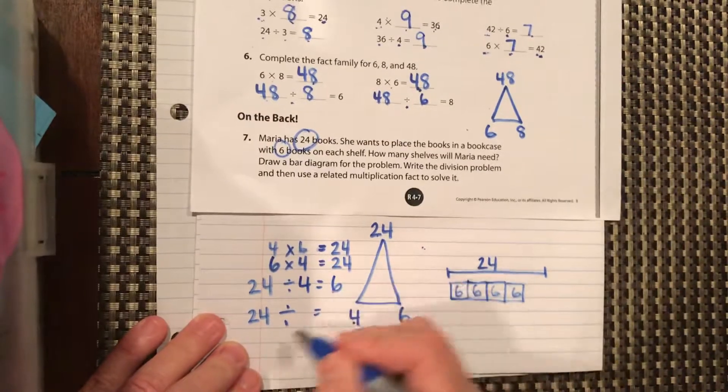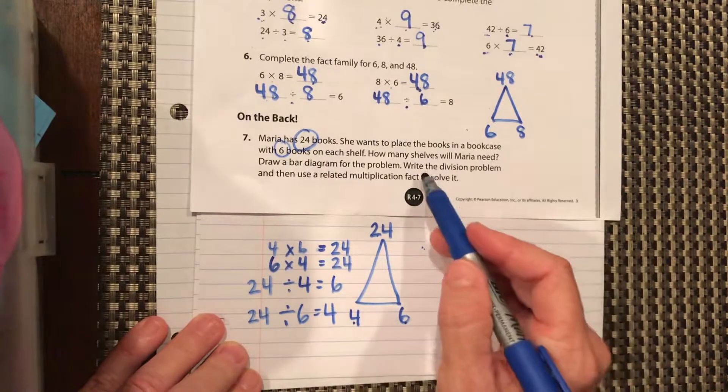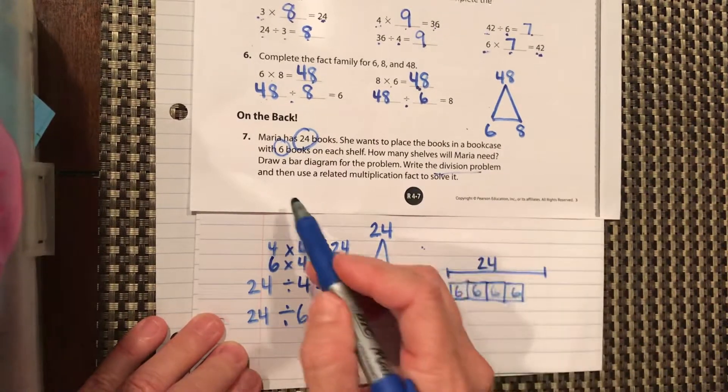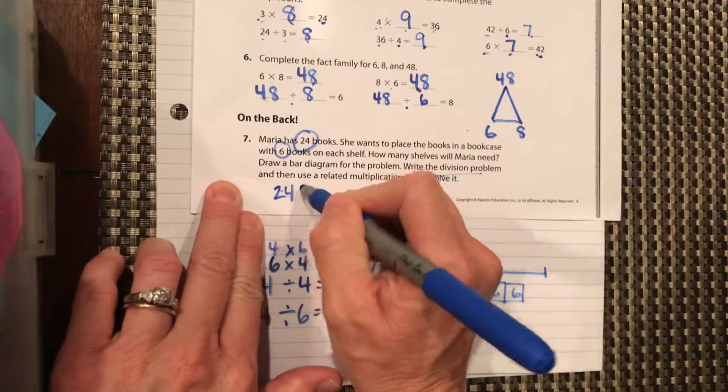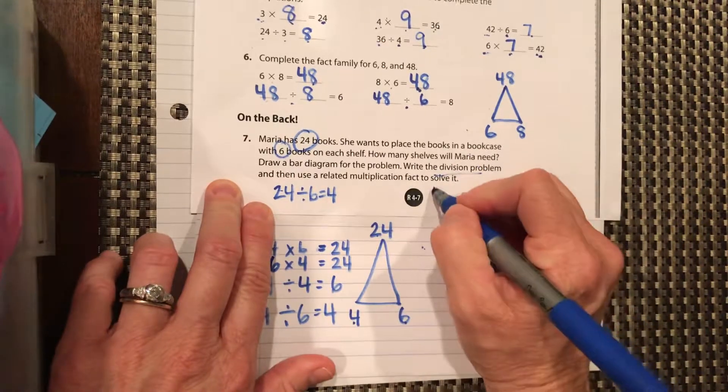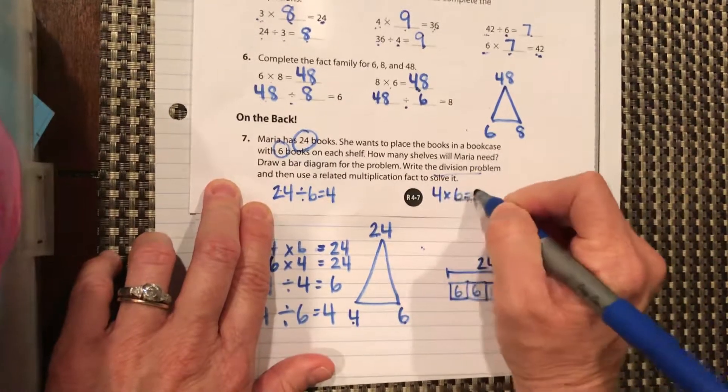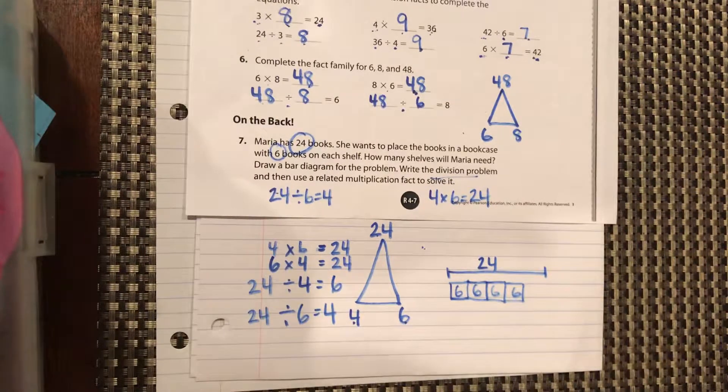24 divided by four is six, and 24 divided by six is four. So you can choose which division problem and which related, but I would go 24 divided by six equals four, and our related multiplication would be four times six equals 24. And there you have it. Good job.